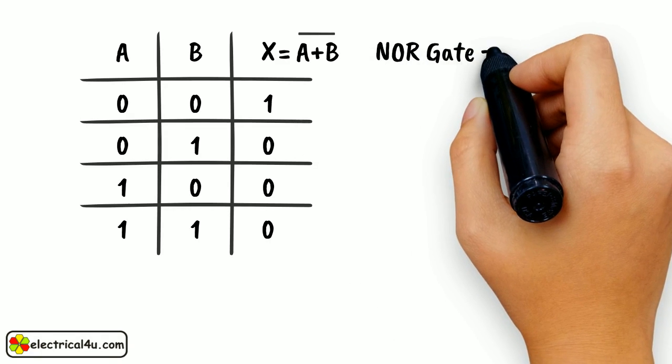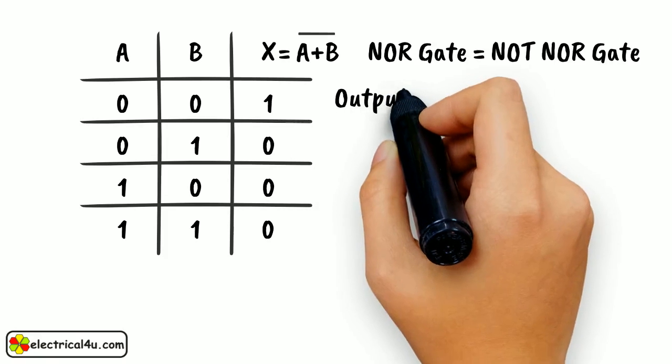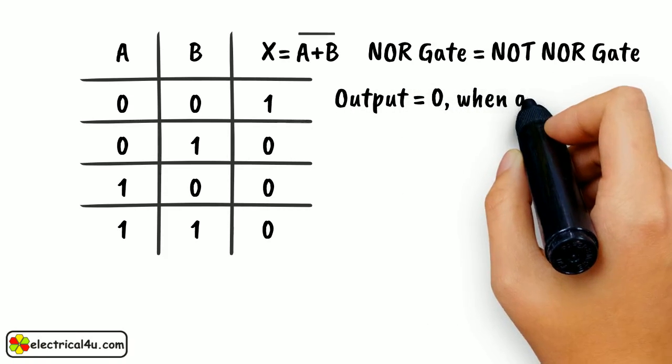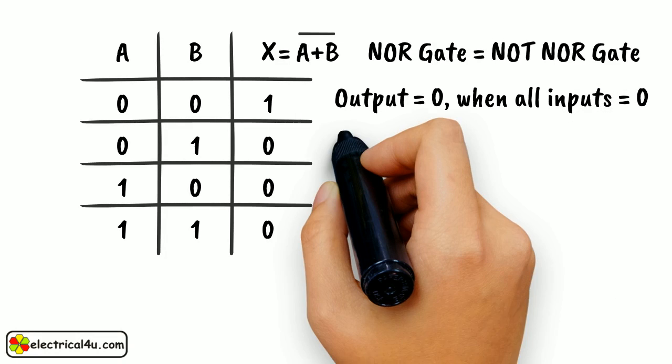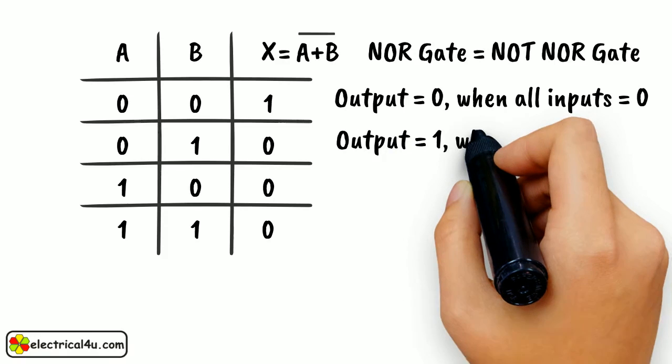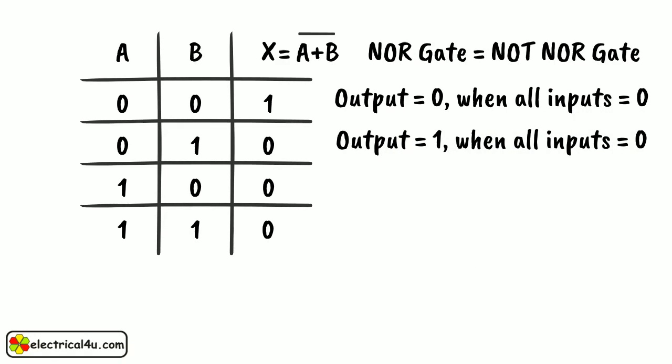NOR gate means NOT an OR gate which means output of this gate is just reverse of that of a similar OR gate. We know that output of an OR gate is 0 only when all inputs of OR gate is 0. But in the case of NOR gate, the output is 1 only when all inputs are 0.